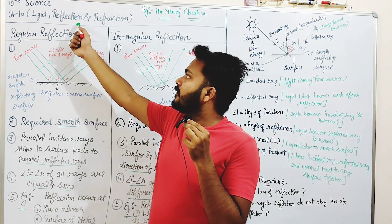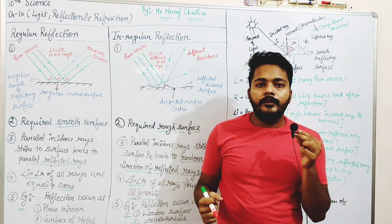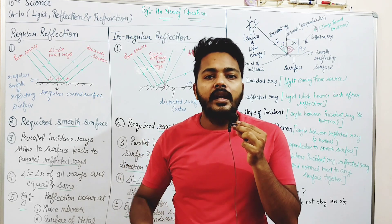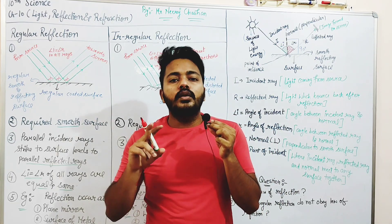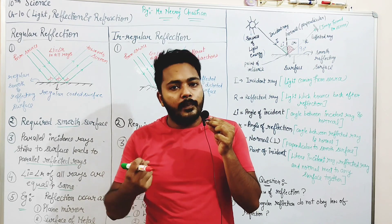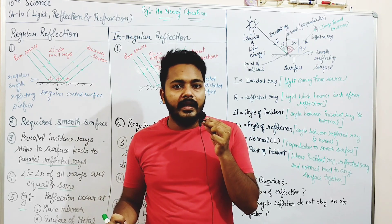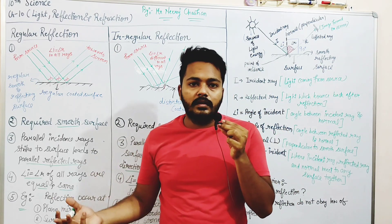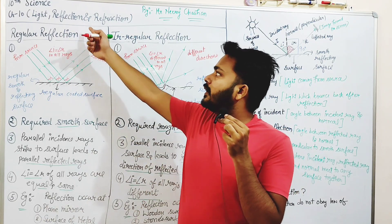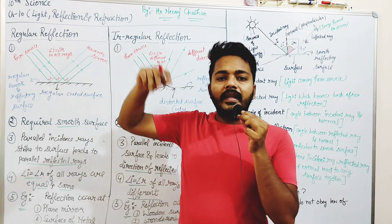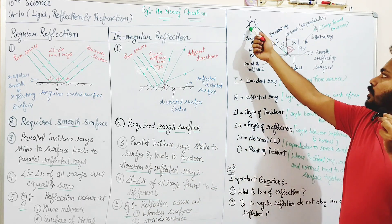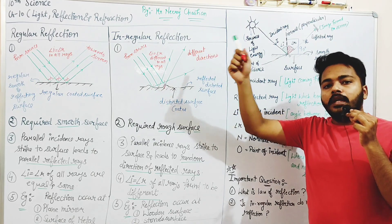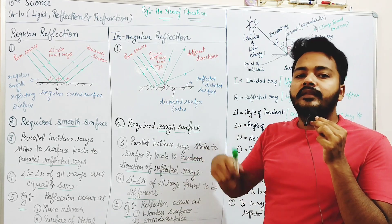The second term is Reflection. When light coming from any source falls on any surface, there are two conditions: either it is absorbed by the surface completely, or it bounces back and returns in a different direction. The second case is called Reflection — when light coming from any source falls on a surface and returns back, this is called Reflection of Light.